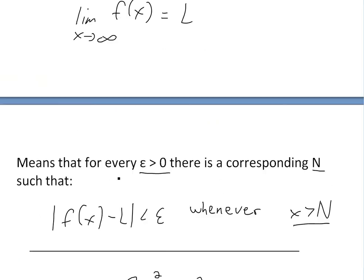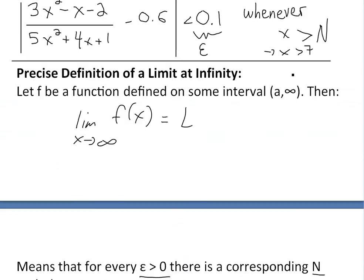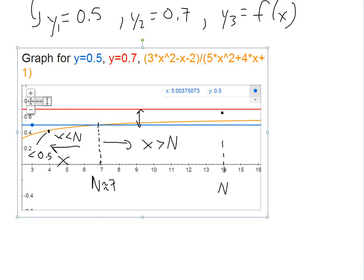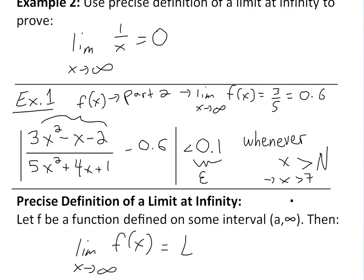So we could write this all down as whenever x is greater than N, or x is greater than seven. And in fact, this could be any number really large. If we make this even larger, let's say 14, if this was our N value, as you can see, it's still in between these two lines. So this orange line, which is f(x), is still in between the two limits of 0.7 and 0.5. So it could be anything greater than seven. It could even be greater than a thousand.